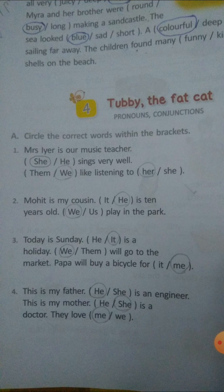Fourth one: This is my father — father is male, so he. He is an engineer. This is my mother — she is a doctor. They love me. So first circle he, then she, then they, then me.